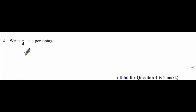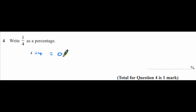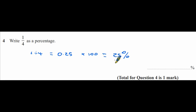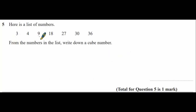Question four: write a quarter as a percentage. This is a calculator paper, so to turn a fraction into a percentage, take one and divide it by four to get 0.25, then multiply by 100 to get 25. So the answer is 25%.